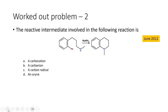Let us move on to the next question. This question appeared in June 2012. The reactive intermediate involved in the following reaction is to be identified — whether a carbocation, a carbanion, a carbon radical, or an arine intermediate is involved. There are four different intermediates and we have to find out which one is involved in this particular reaction.